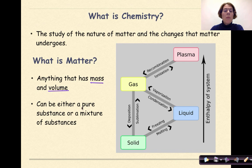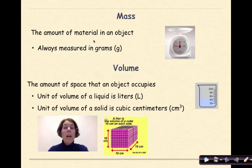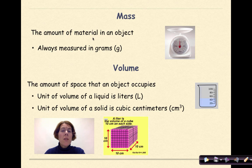It can either be a pure substance or a mixture of substances. Mass is defined as the amount of material in an object, and it's always measured in grams or kilograms depending on your situation.